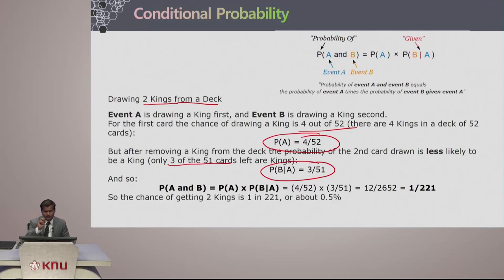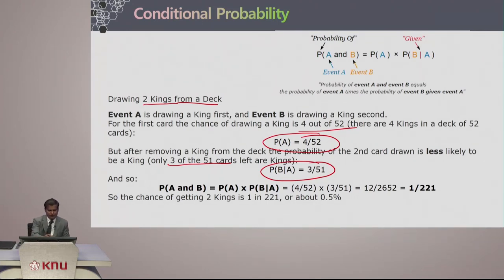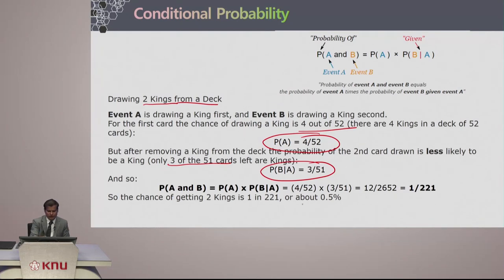That is the probability of B given A — that event A has already happened. We can write it as: probability of A and B equals probability of A times probability of B given A. When you multiply 4/52 by 3/51, you get 1 by 221, which is around 0.5 percent probability — very low.